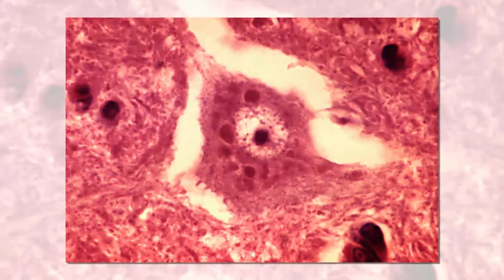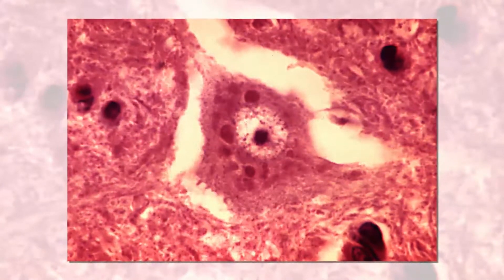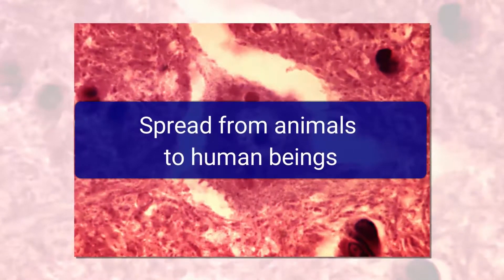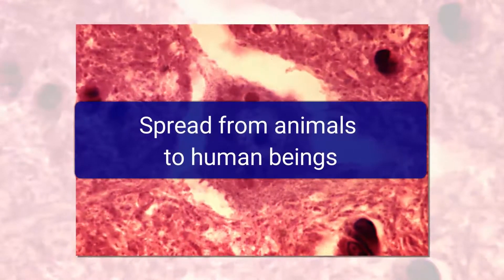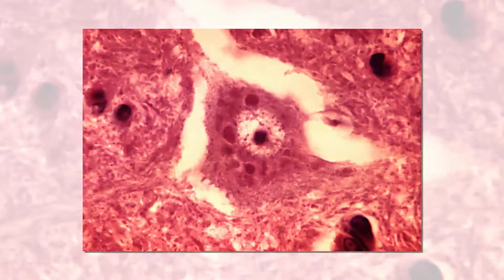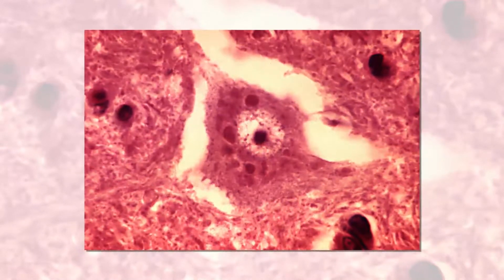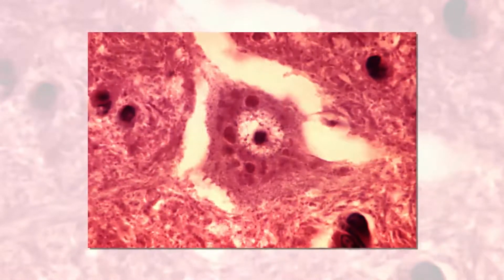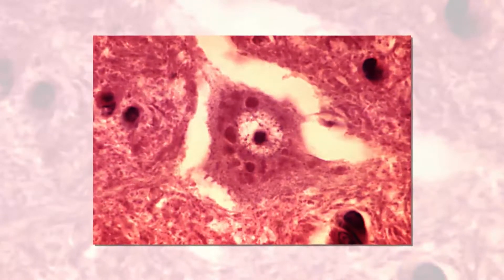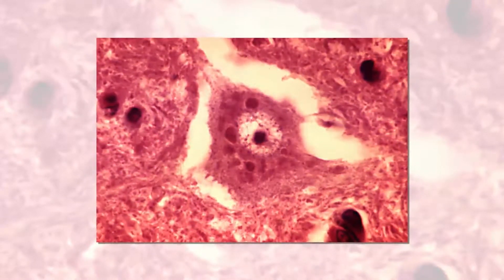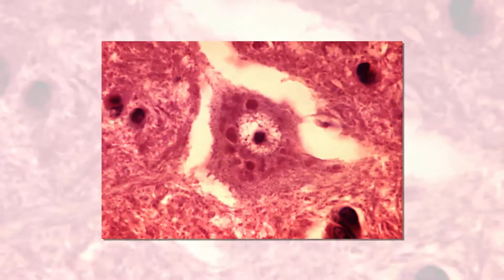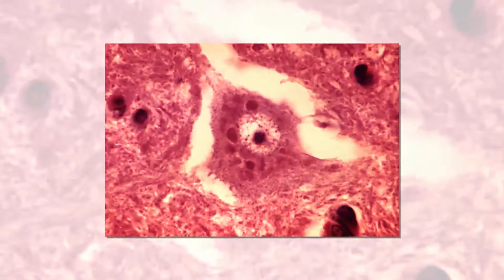Rabies is a very dangerous virus that is spread from animals to human beings. When an animal bites you, the rabies virus is transferred to your body and begins to spread to the nervous system, where it interferes with the function of your brain to the point you become mad. It is prevented by giving animals shots against rabies and ensuring that if you get bitten, you rush to the hospital. The dog is the one that often spreads rabies.